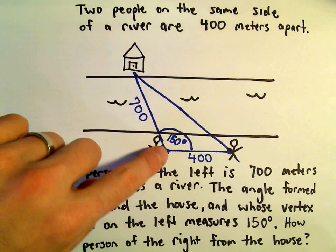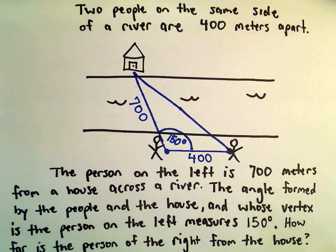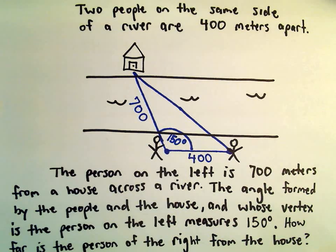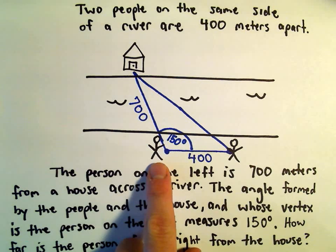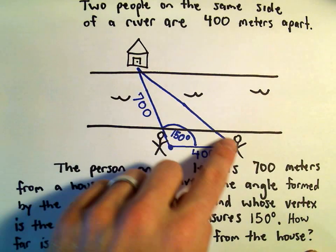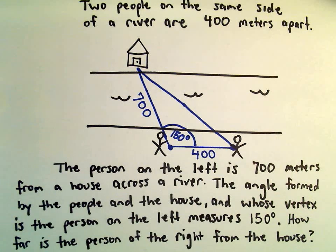The person on the left side is 700 meters from a house that's across the river. That person's 700 meters away, and the angle formed by the people in the house is 150 degrees when we use the person on the left as the vertex. We just want to know how far the person from the right is from the house.